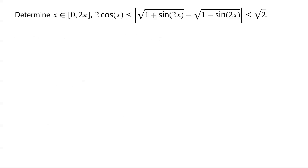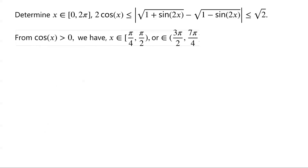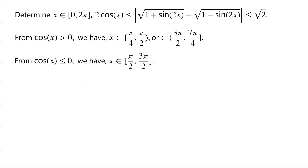In summary, for cos(x) > 0 we have x ∈ [π/4, π/2) or x ∈ (3π/2, 7π/4]. For cos(x) ≤ 0 we have x ∈ [π/2, 3π/2]. Hence, overall, x is in the closed interval [π/4, 7π/4]. That is the answer.